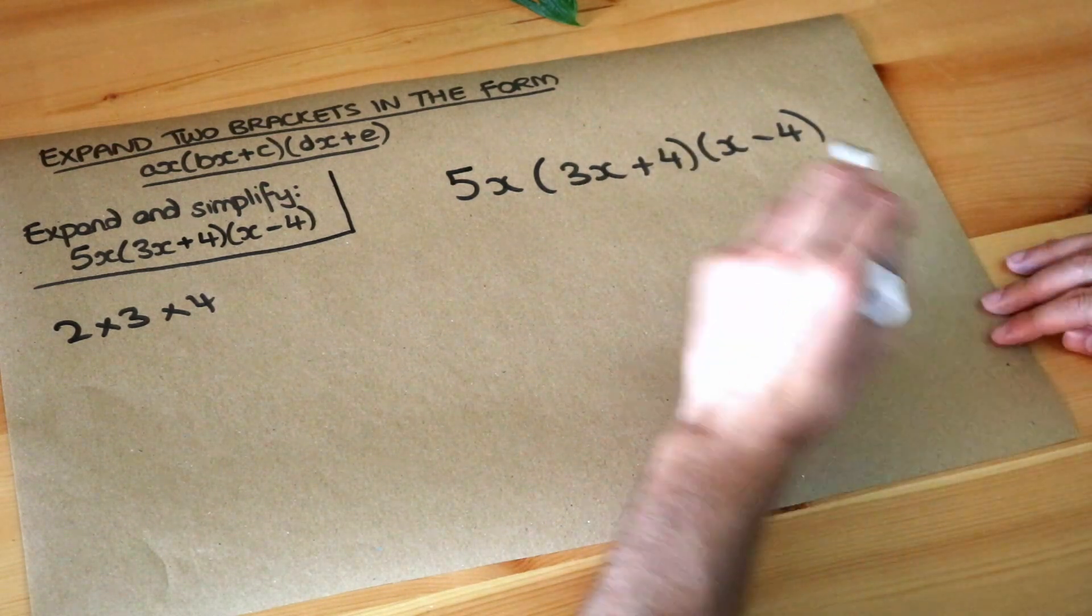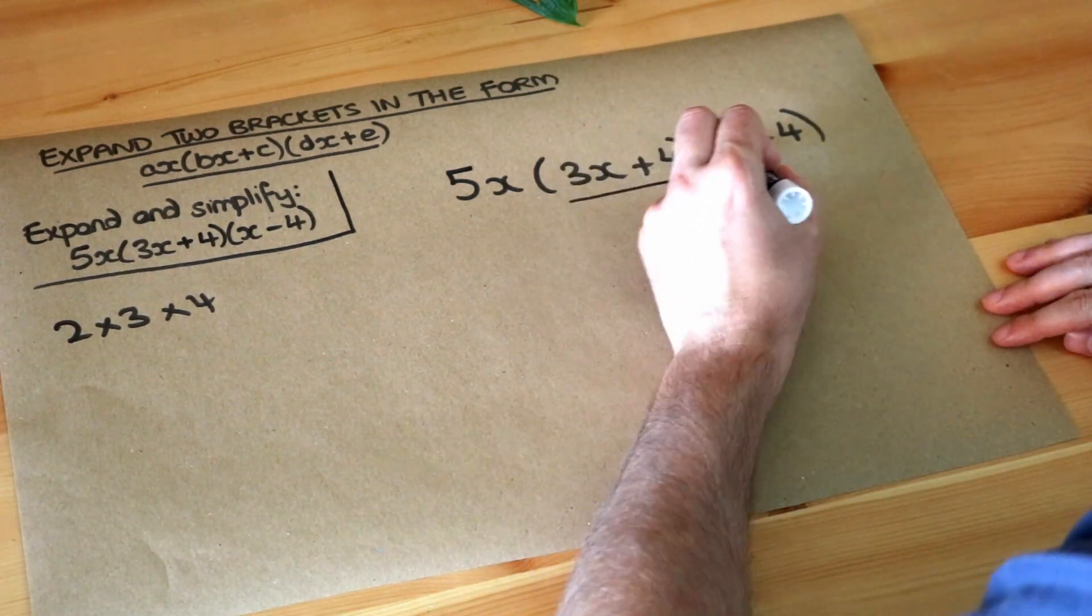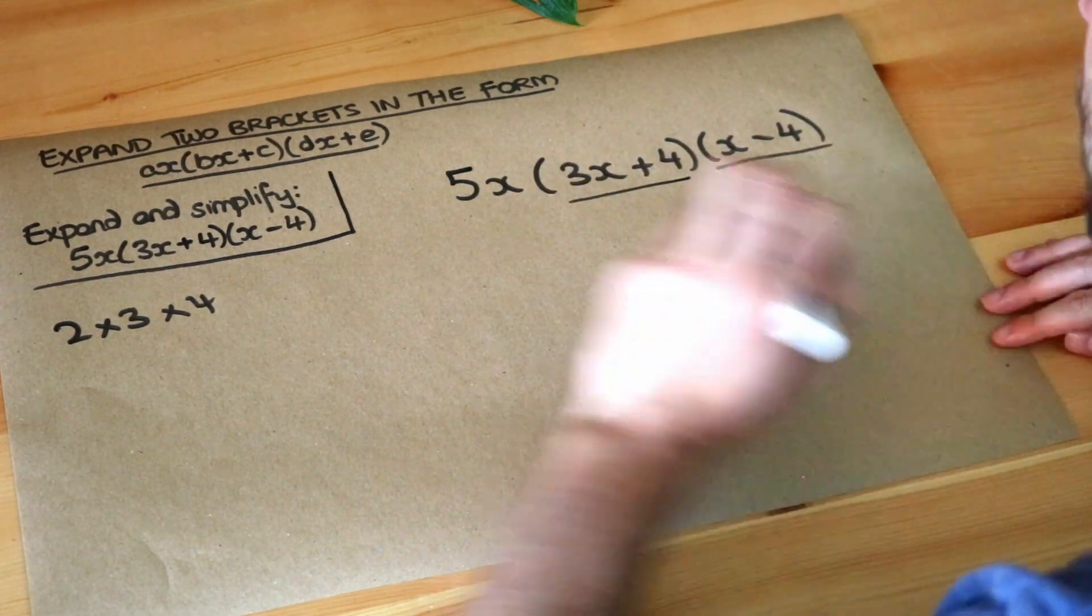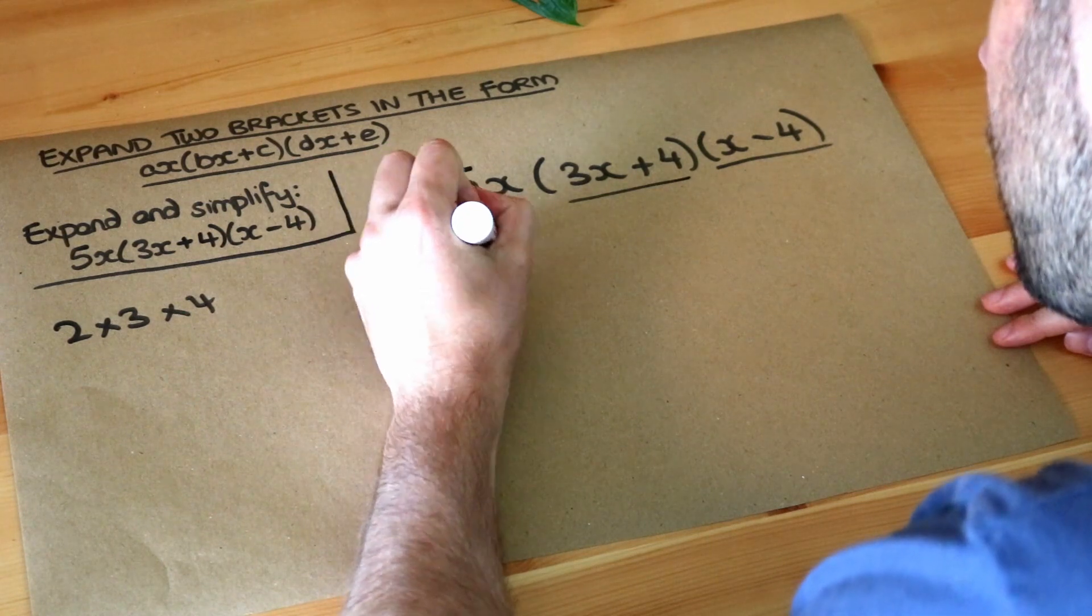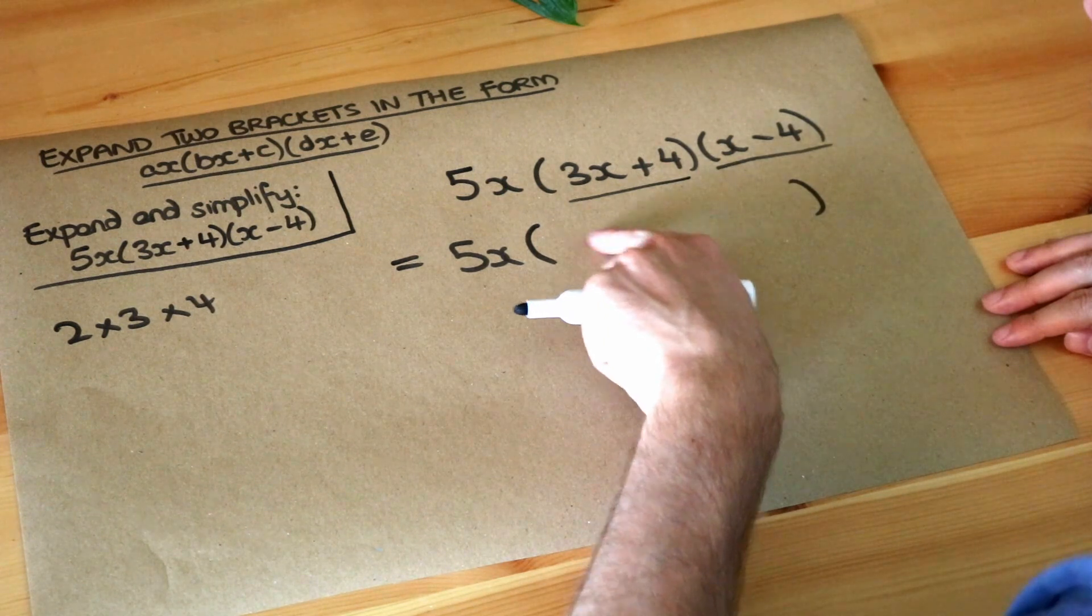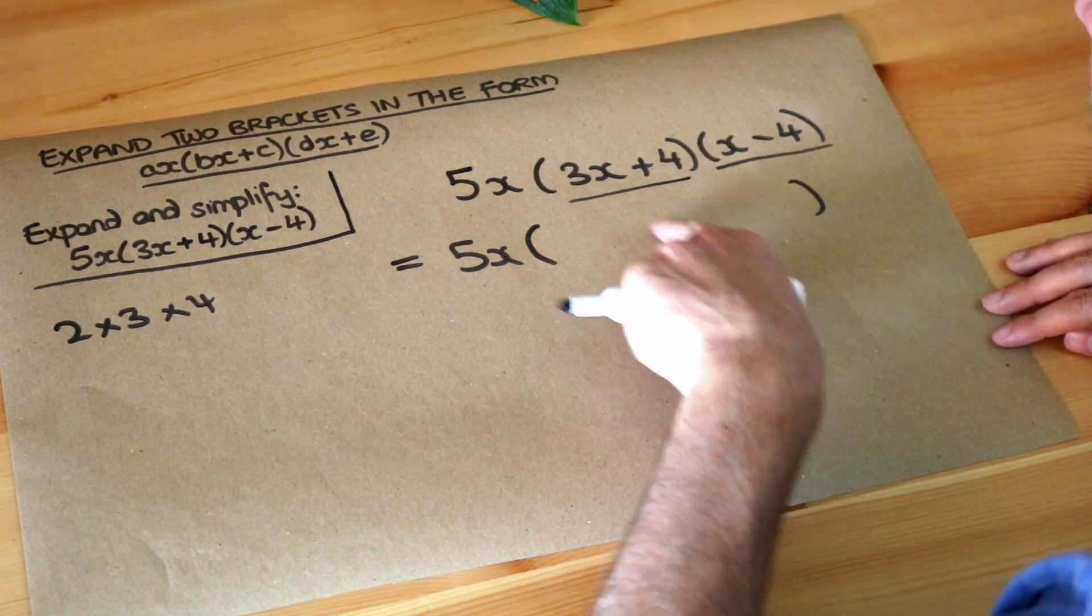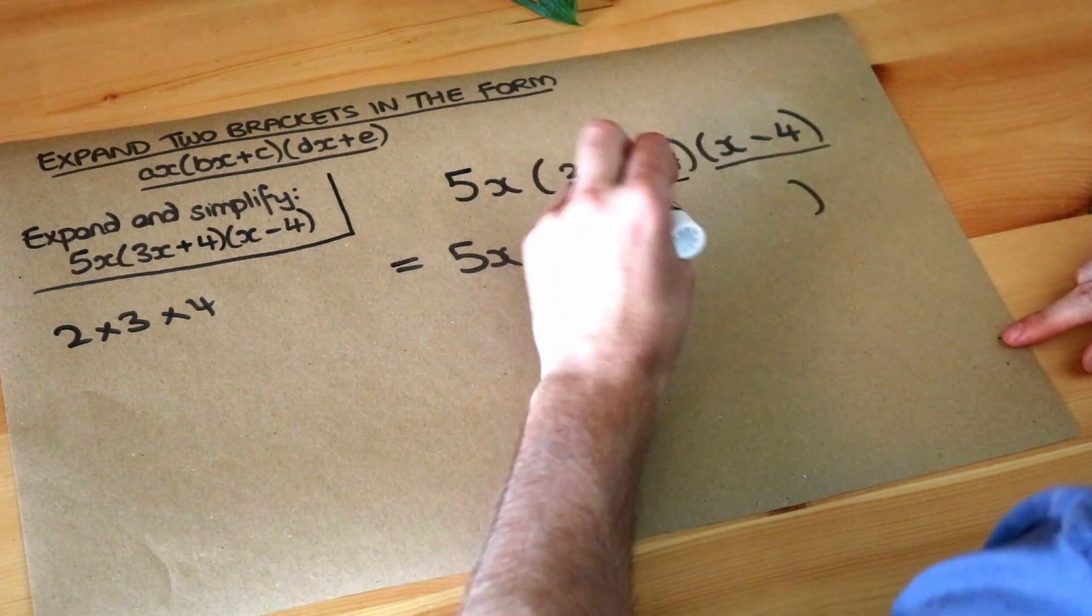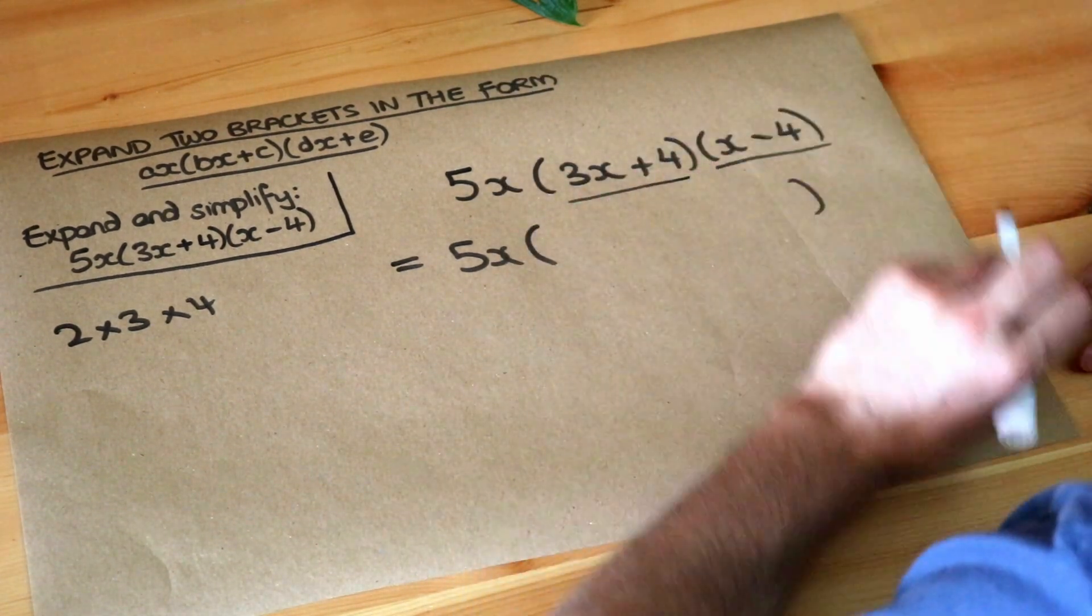Now it really doesn't matter, but I'm just going to multiply these two brackets together first, and then we're going to times it by the 5x. So with these two brackets multiplied out, I'm going to need a bracket here, because this bracket is subsequently going to be multiplied by the 5x. But let's just expand this out. We do each thing in the first bracket times each thing in the second.